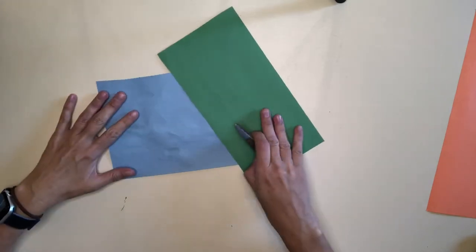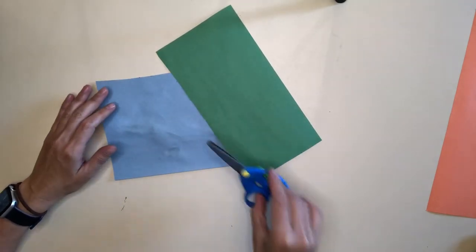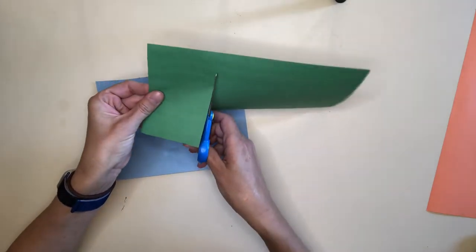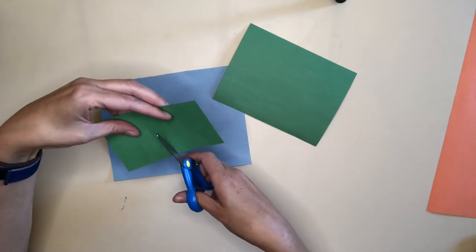I have my construction paper here—I have some blue and some green—and my scissors. I'm just going to cut all sorts of shapes, so I'm going to cut some rectangles. Maybe I'll even make that into two squares. I could cut some triangles, some circles, whatever works best for you.